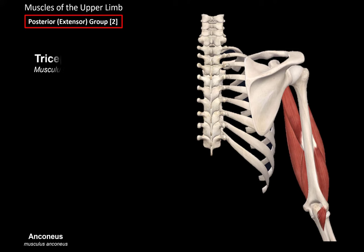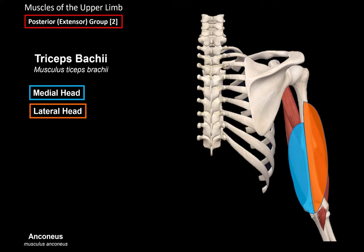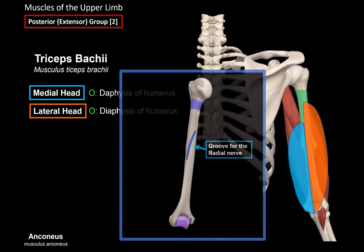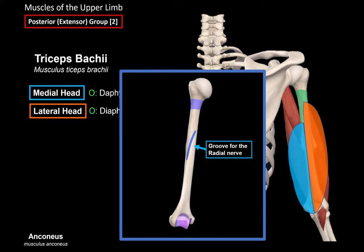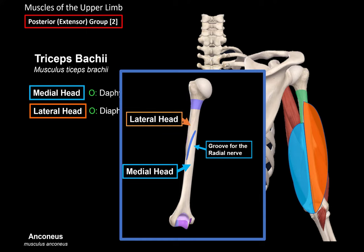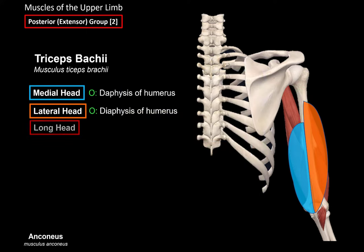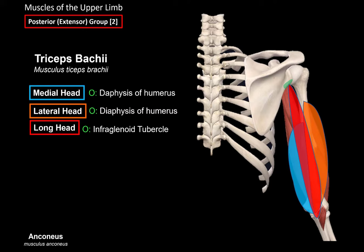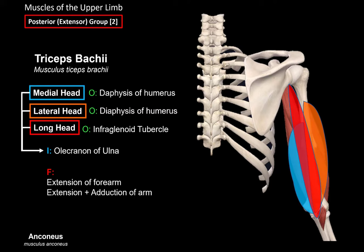The last muscle is called the triceps brachii. It's called triceps, so it has three heads — a medial head and a lateral head. These two heads are located deep, next to the bone, and both originate from the posterior diaphysis of the humerus, forming an important landmark around the groove for the radial nerve. The medial head originates under the groove of the radial nerve, and the lateral head originates above it. The long head lies on top of the medial and lateral head and reaches even further, originating from the infraglenoid tubercle of the scapula. All three parts unite and insert at the olecranon of the ulna. The function of this muscle is to extend the forearm, as well as extend and adduct the arm.